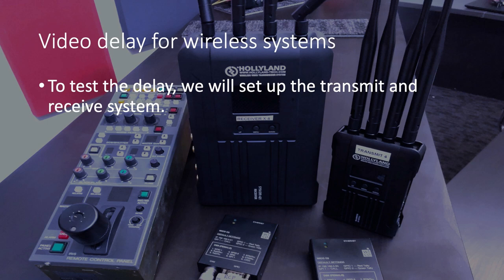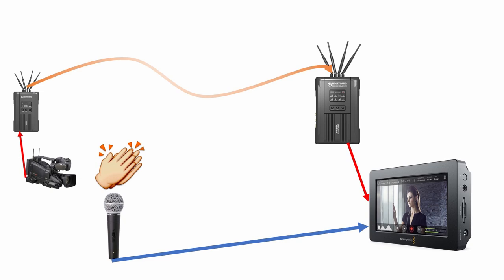To test the delay we will set up the transmit and receive system. Here is a diagram of how I plan to set this up. The camera goes into the transmitter which is run by RF over the 5 gigahertz band and is decoded at the receiver and goes into a Blackmagic monitor recorder. At the same time I'm going to set up a microphone and run a microphone lead all the way to my second input of the monitor.